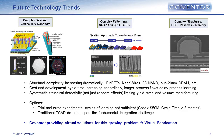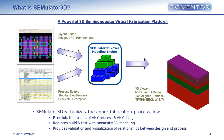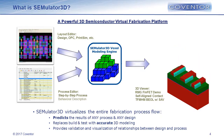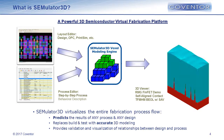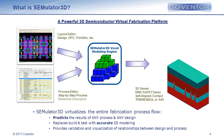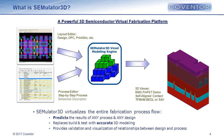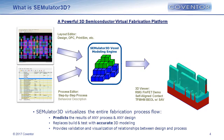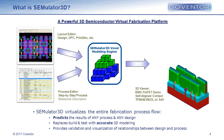At Coventor, we're providing virtual solutions for this major problem, and we call this virtual fabrication. This is Simulator 3D — a 35,000-foot view of what it does. It's a virtual fabrication platform. We organize this software just like the fab, and at the heart of our software is our voxel modeling engine. Voxel modeling is quite different from any other process modeling platform — it's very robust for arbitrary levels of complex 3D geometry, and we have a lot of IP surrounding voxel modeling so we can do this very, very fast.